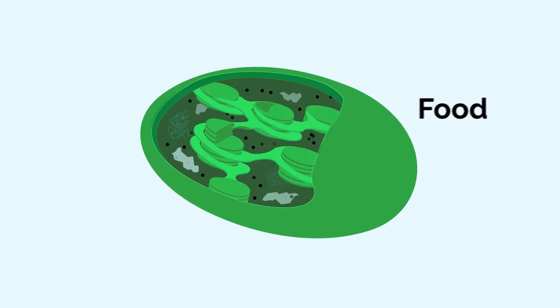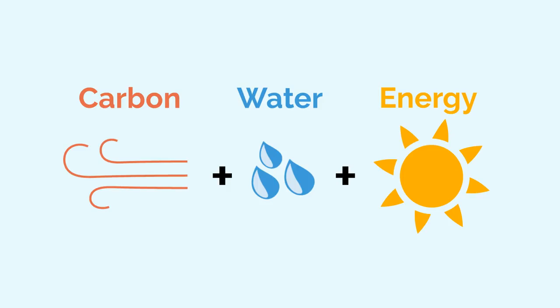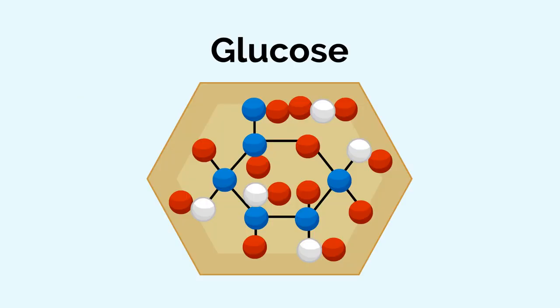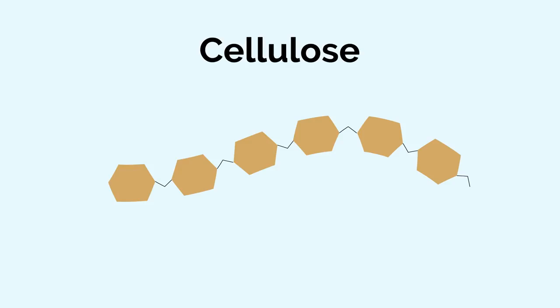Photosynthesis is how plants convert sunlight energy into food they can use. Carbon, water, and energy are used in this process to make glucose, which is a type of sugar. Glucose molecules can then combine to form long chains called cellulose, which are used to build plant structures, like cell walls.